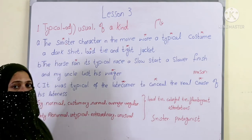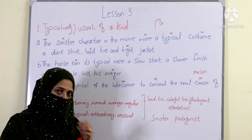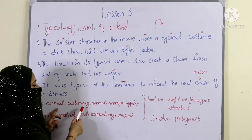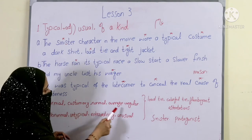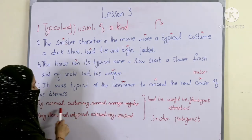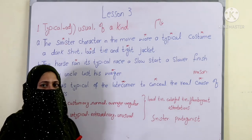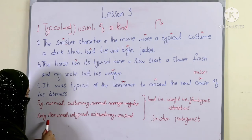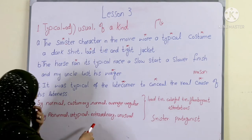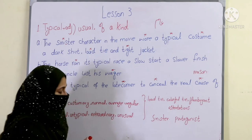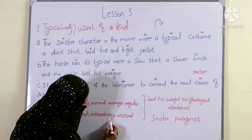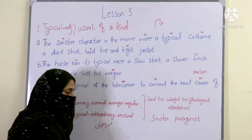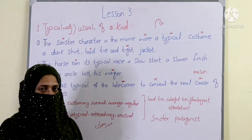Now we come to the synonyms and antonyms of 'typical.' Its synonyms are: normal, customary, average, and regular — these are all very common words. Its antonyms are: abnormal, atypical, or extraordinary. Extraordinary means something unusual — one category is a usual, ordinary, common thing, and the other is extraordinary.